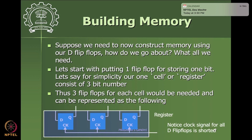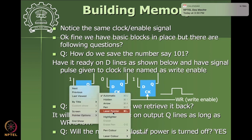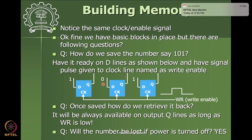Now let's see how this value can be stored and retrieved from the register. Say we want to save the number 101 — that number should be available as high, low, high voltage on the three pins: one for the first flip-flop, zero for the second, one for the third. When we give the write enable or WR clock signal as a pulse, that input gets stored inside the D flip-flop and the value will be available at the Q terminal.